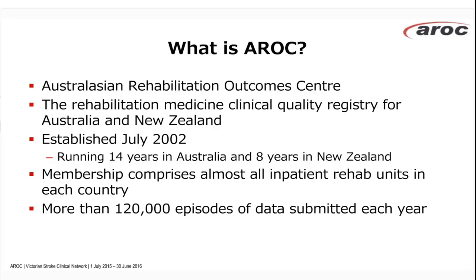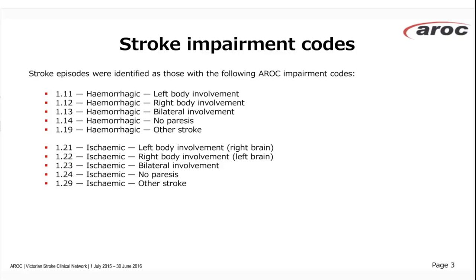I've only got 20 minutes so I wanted to focus on stroke. In the AROC data set, stroke comprises about five percent of the data episodes we receive. We classify stroke by an impairment code — the major split is hemorrhagic and ischemic, with some sub-splits in each of those impairment groups. Some of the slides I'll show you will be looking at stroke data by impairment.